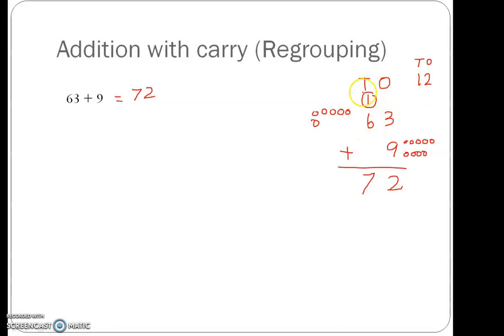You need to add 6 plus 1 is 7. We get 72.